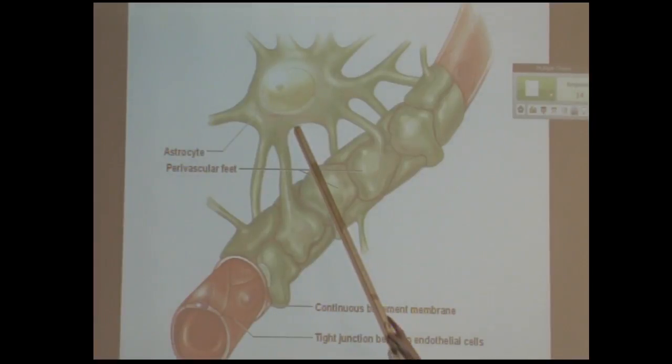So here's an astrocyte, one cell, and you see it kind of has all these feet that come out and wrap around the capillary, which means anything that's going to get to your neurons has to go through all three of those layers. So for example, there's something really toxic in the blood. Who do you think is going to get killed first? The neuron or something else? This tough little green cell here, that astrocyte, it's like a bodyguard.